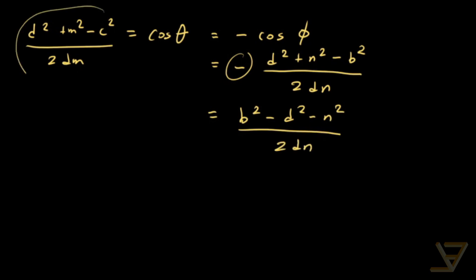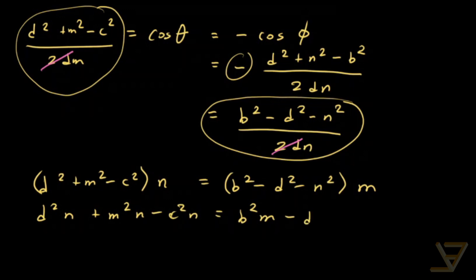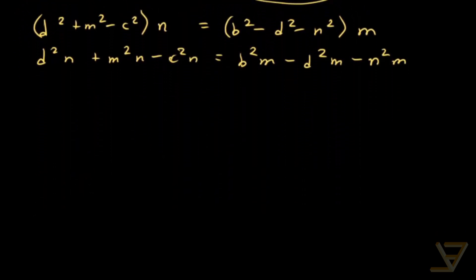Now we have this on the left side and this on the right side. So we can get rid of 2dm from both sides. And now we're going to cross multiply. So we get d squared plus m squared minus c squared times n is equal to b squared minus d squared minus n squared times m. So let's expand it out. We get d squared n plus m squared n minus c squared n is equal to b squared m minus d squared m minus n squared m.